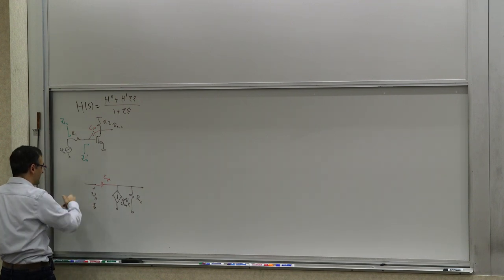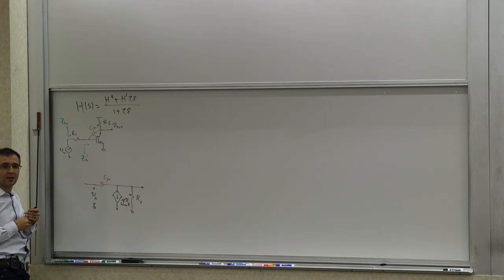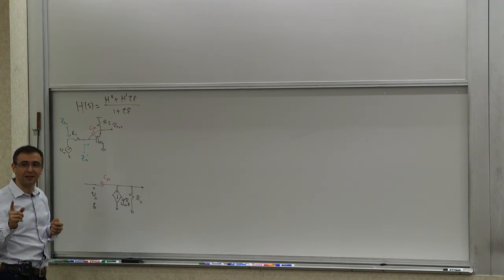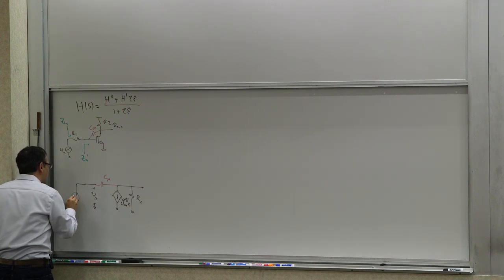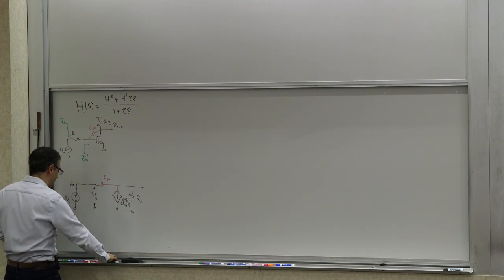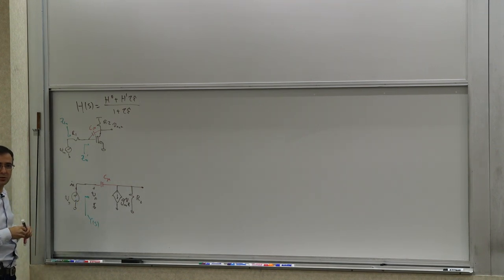We're trying to calculate the input impedance here. A voltage source appears to make it easier. But if we're applying a voltage source, we have to be careful — what we're calculating is an admittance, not an impedance. So apply a voltage source V_x and measure I_x. What we are really calculating is Y(s), not Z(s).